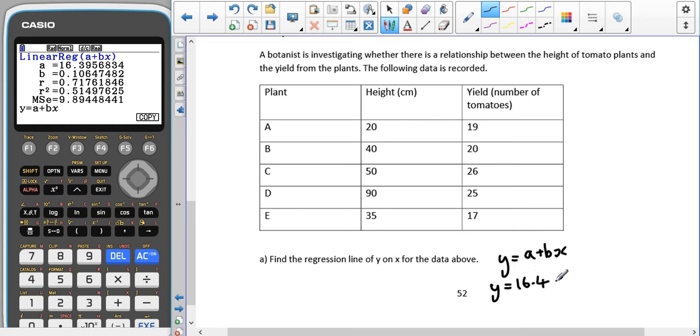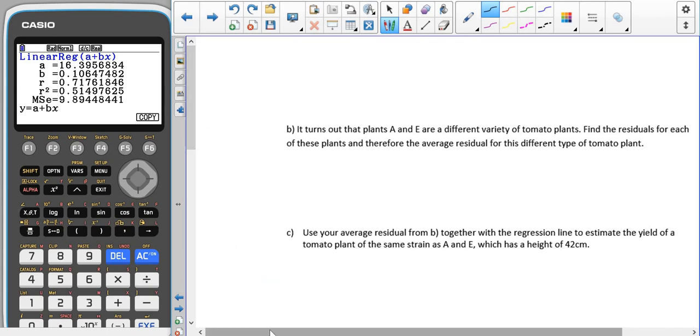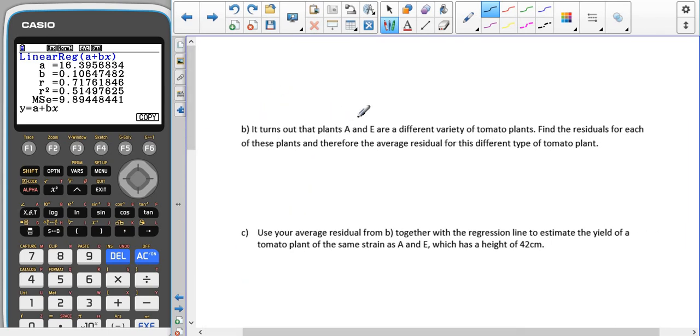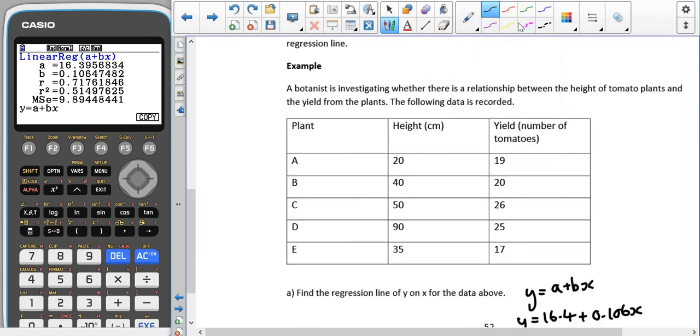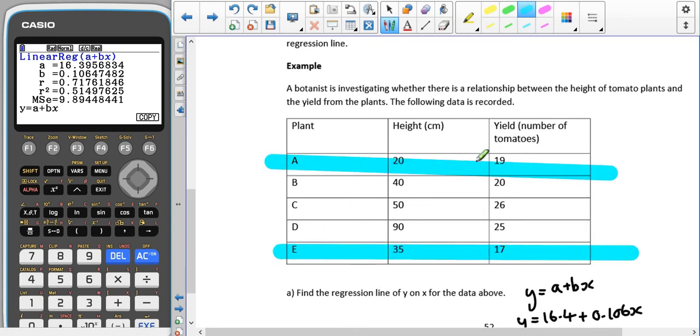In part b, we're told that plants A and E are a different variety of tomato plant, and we need to find the residuals for each of these plants and then the average residual. Looking back at the x values, A is 20 and E is 35. These two plants we are saying are slightly different.